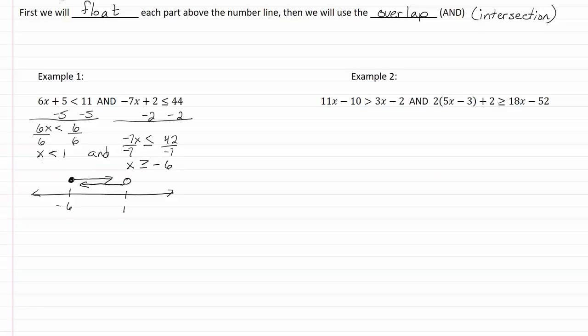Now because both have to be true, we're only going to use the part where they overlap. So that means we're going to have a closed dot at -6, an open dot at 1, and our solution is going to be in between -6 and 1. So our interval notation is going to be bracket -6 comma 1 parenthesis.